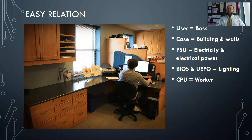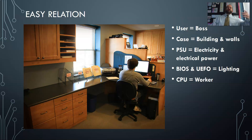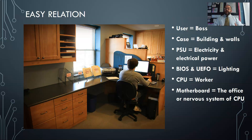The CPU is the worker inside the computer — it does all the thinking. It's a fast worker. Some workers are so fast they can work like four, six, or eight people at the same time. The CPU, Central Processing Unit, is like the worker. Inside the office, you also have ways to communicate, and that's what the motherboard does — it's the nervous system of the CPU, sending signals, data, and power where needed.